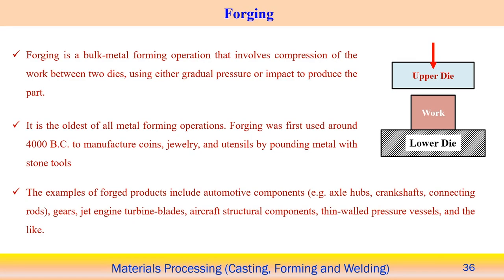Another metal forming process is the forging process. Forging is a bulk metal forming operation where an upper die and a lower die are used to apply compressive load on the work piece to deform it. It is a very old process, and was earlier used for manufacturing coins, jewelry, and utensils using open die forging.